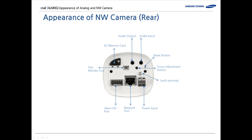If you look at the rear of the network camera, we have an SD memory card slot for local recording, audio output for speakers, and audio input for a microphone. If you have the YG3 box-type camera, there is a built-in microphone inside the camera, so you can use it without installing an additional microphone.